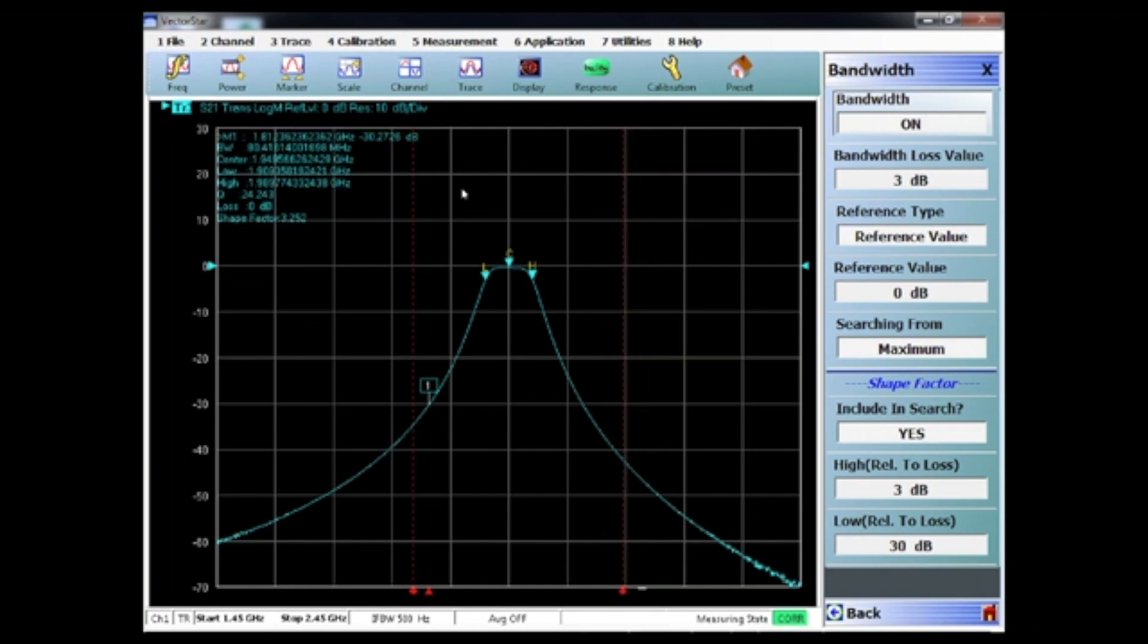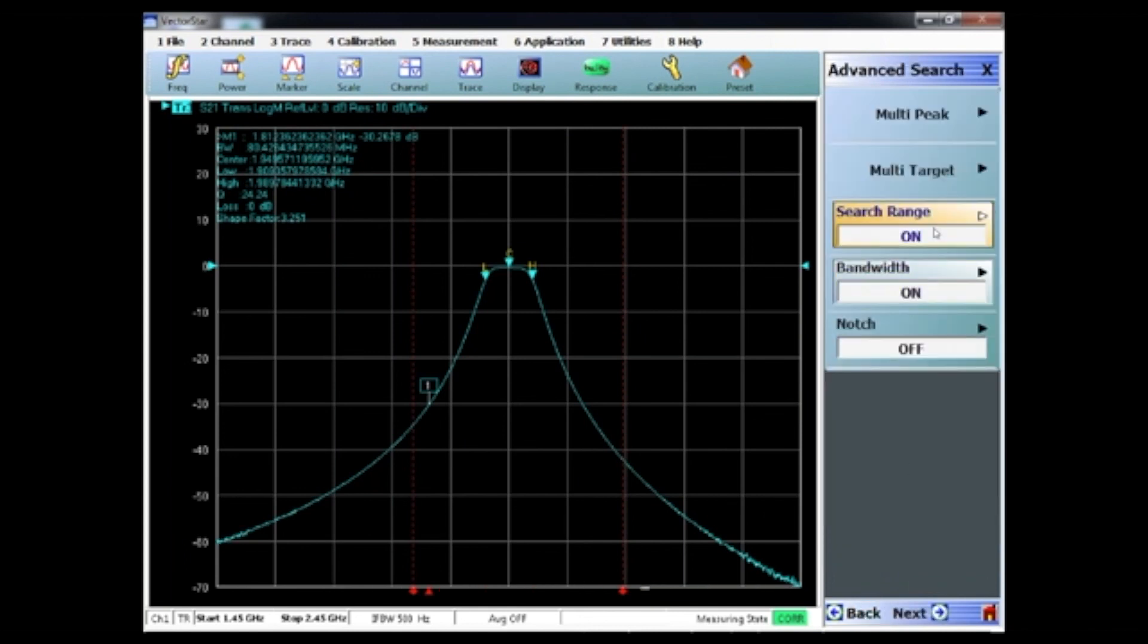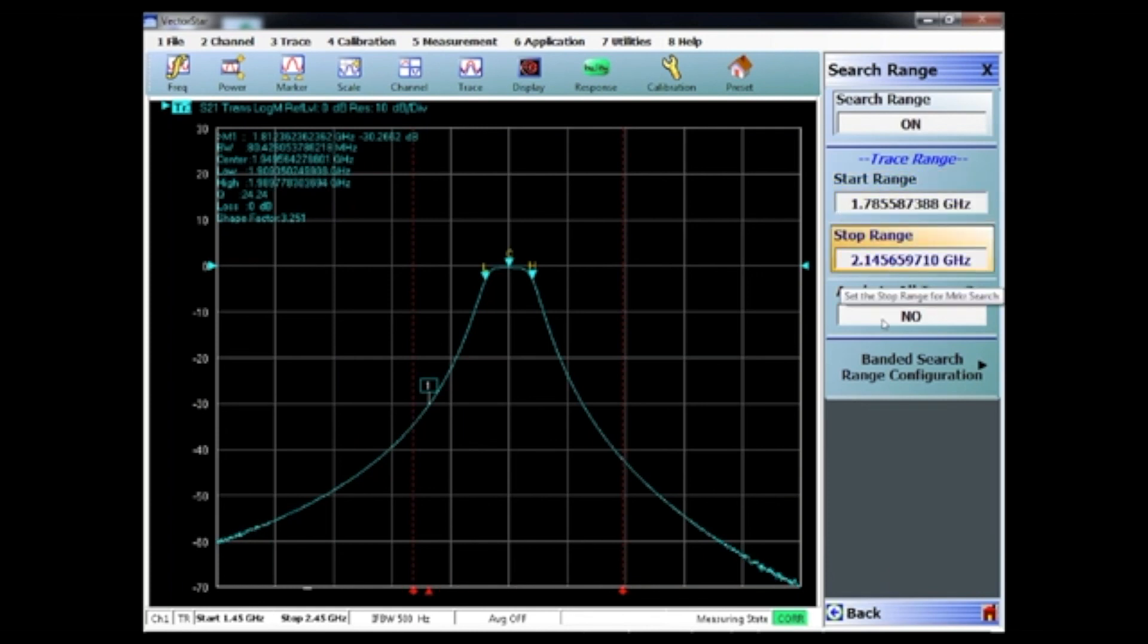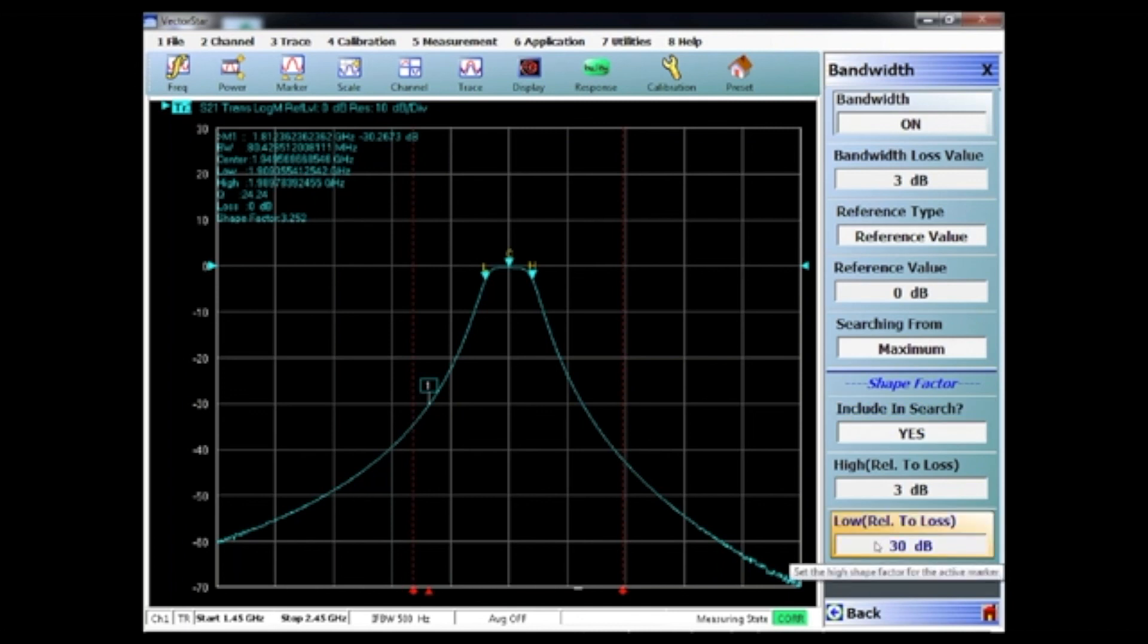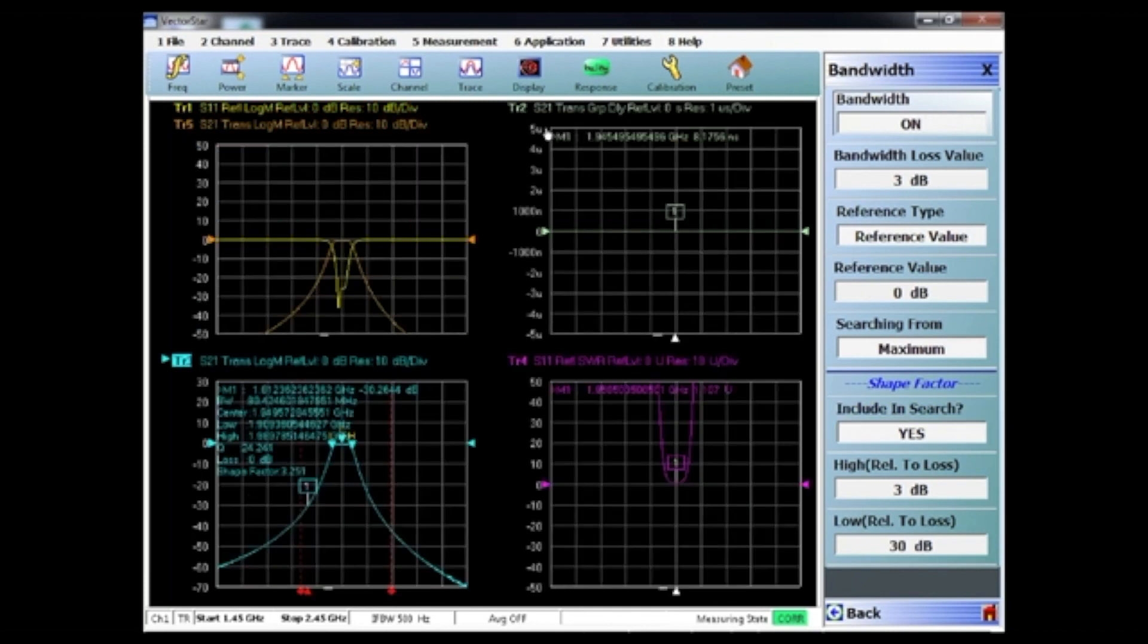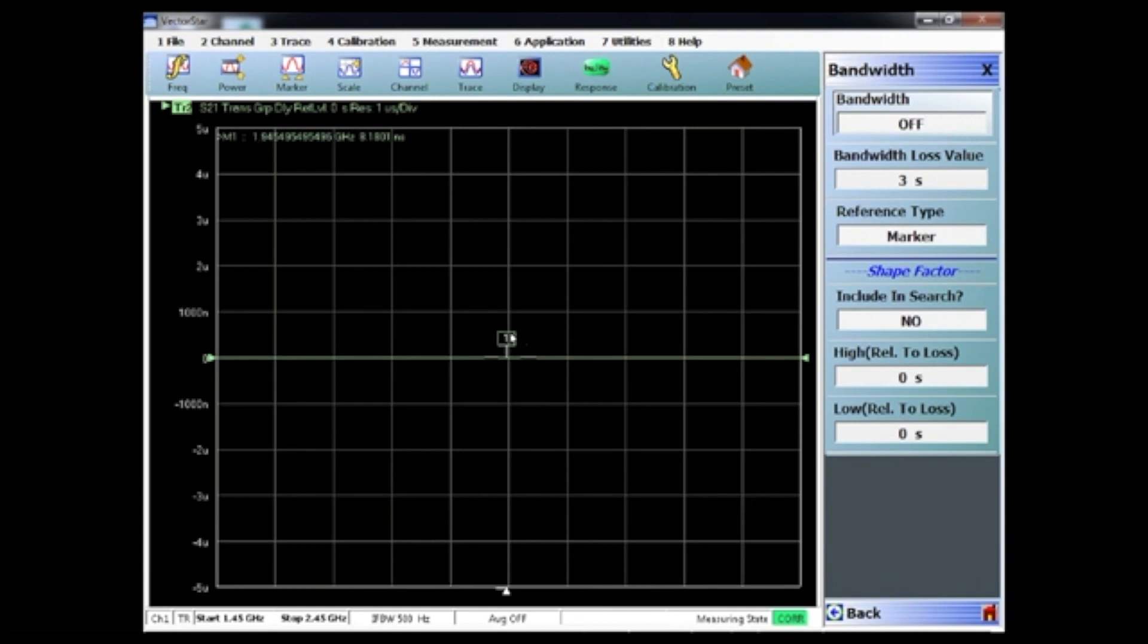You'll also notice that you can apply a search, a frequency search. I'll go back and go into search range, and you can set the start and stop range right there. You can change this number to whatever you need to measure. Different filters have different specifications, and that'll be indicated and tell you what to set these values to. Another common measurement for a filter is group delay. You'd move your marker to the frequency where it functions, and you can see that our group delay is 8.1 nanoseconds.